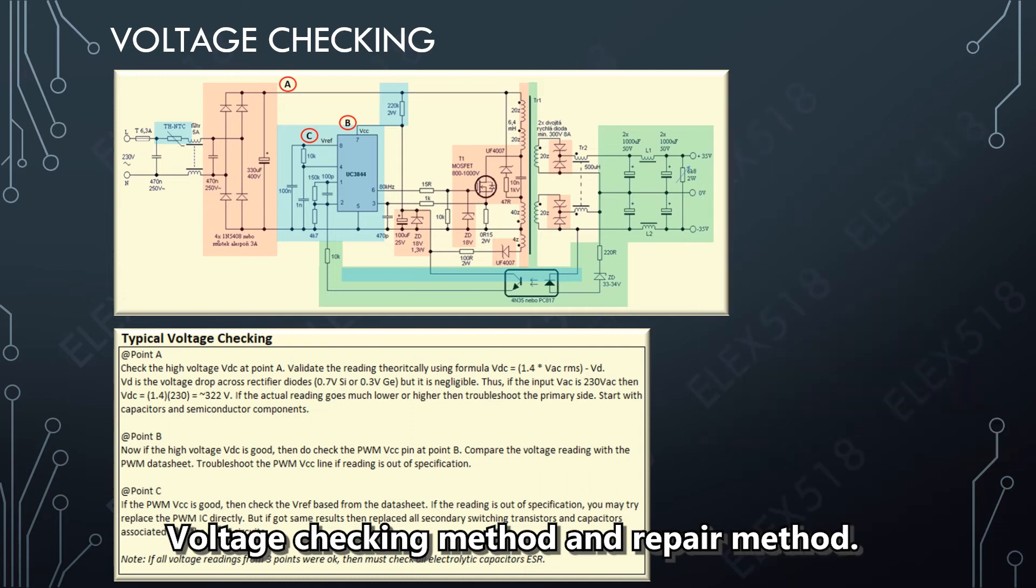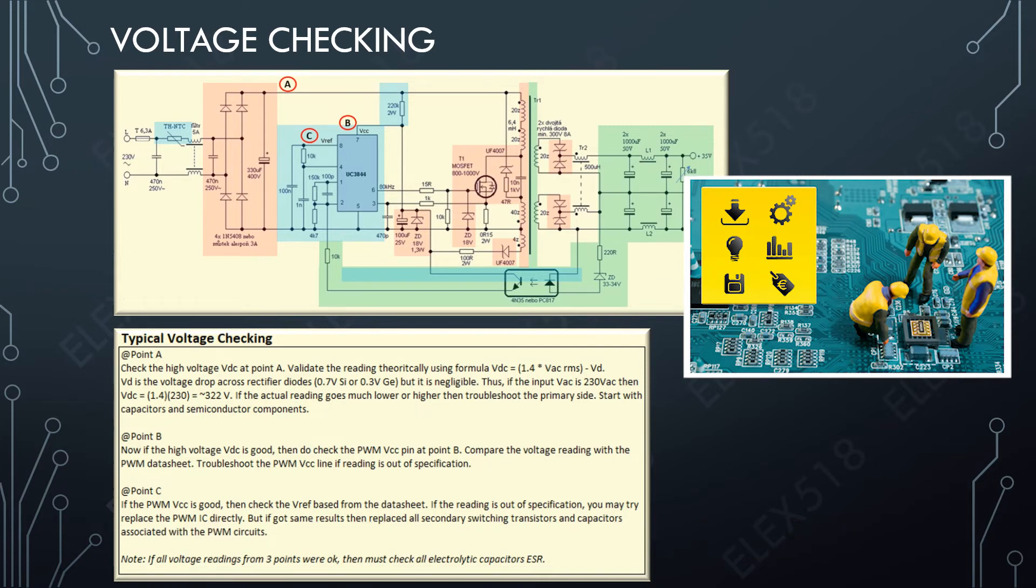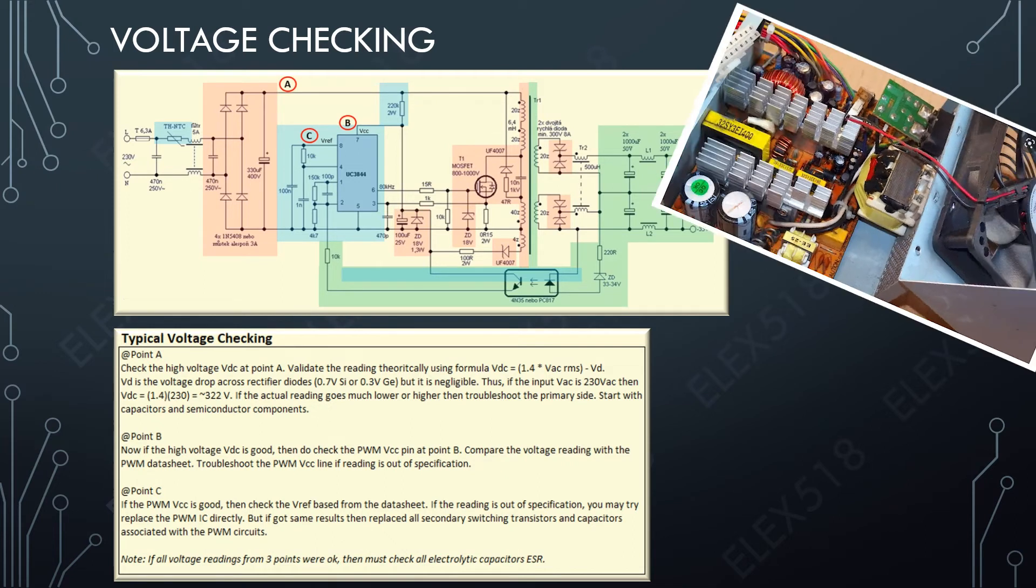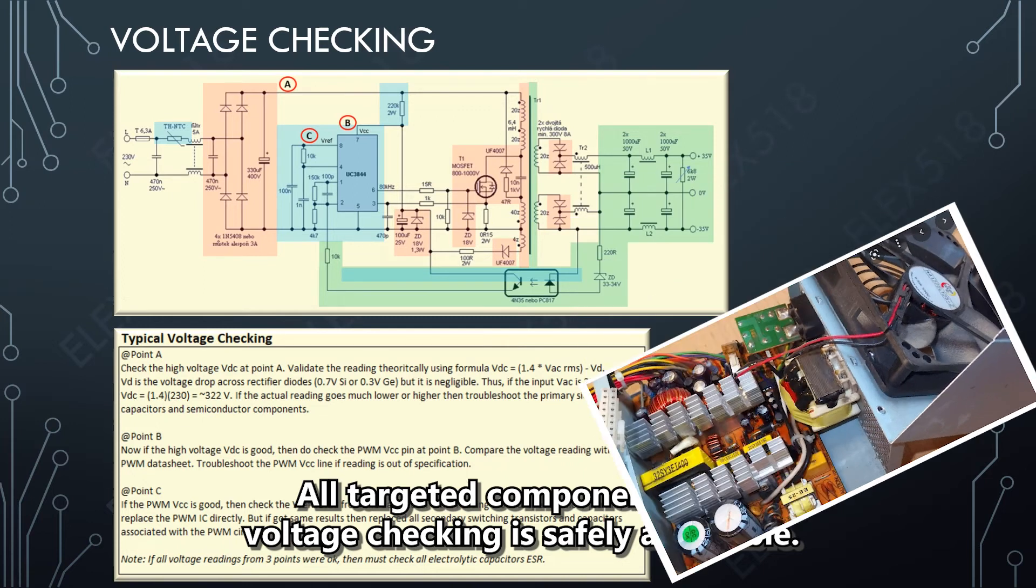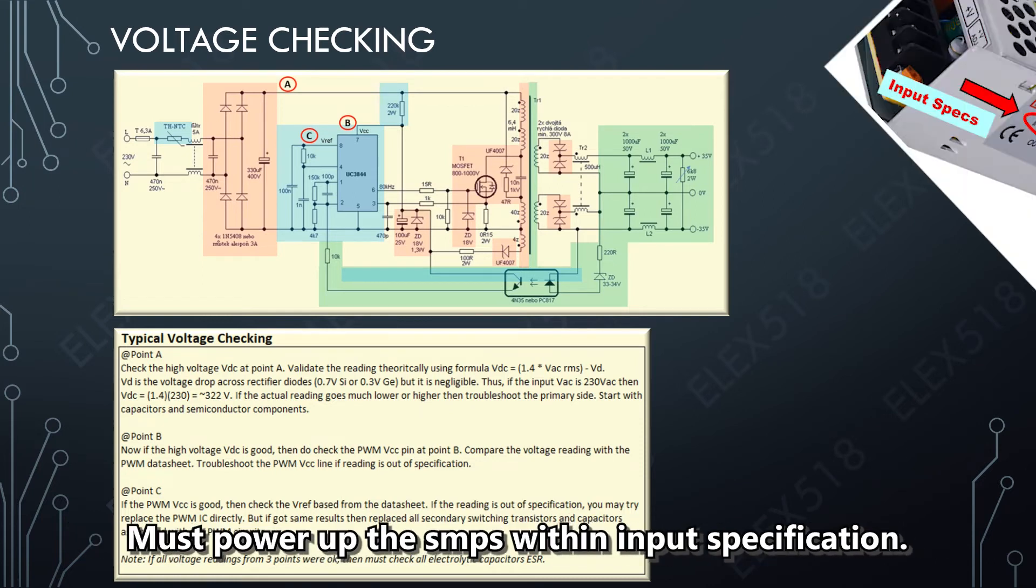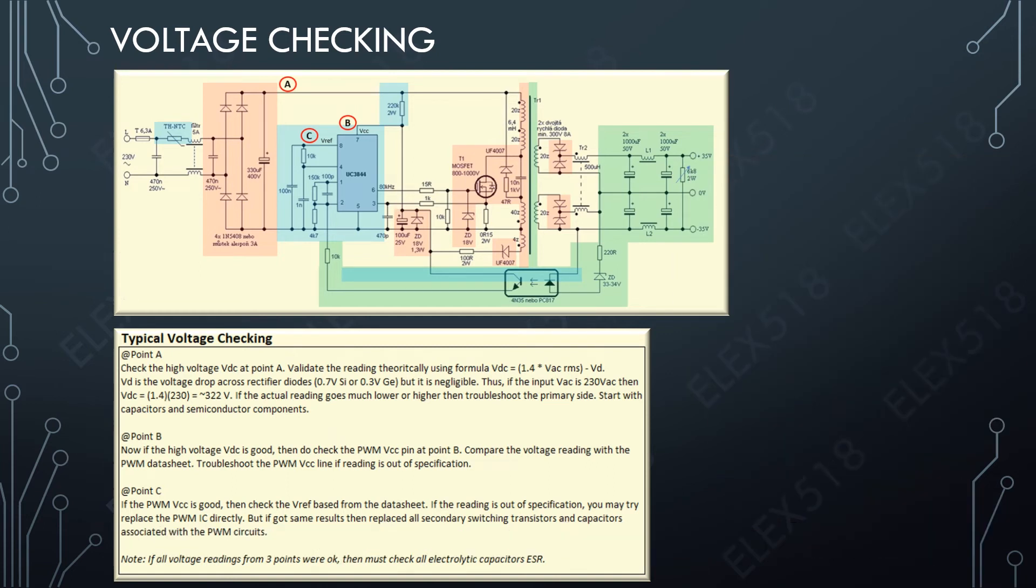In this slide I want to share the initial voltage checking and repair flow that we do before we go deeper in troubleshooting. Of course at first I need to remove the cover and make sure I get access to the components for voltage checking. I also need to power up the power supply based on input specification. Please take note of point A, point B, and point C, because these are targeted points for our initial voltage checking.